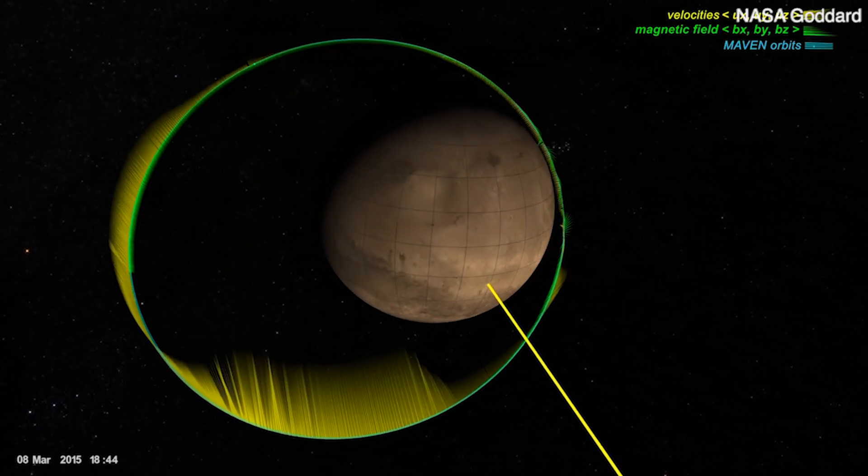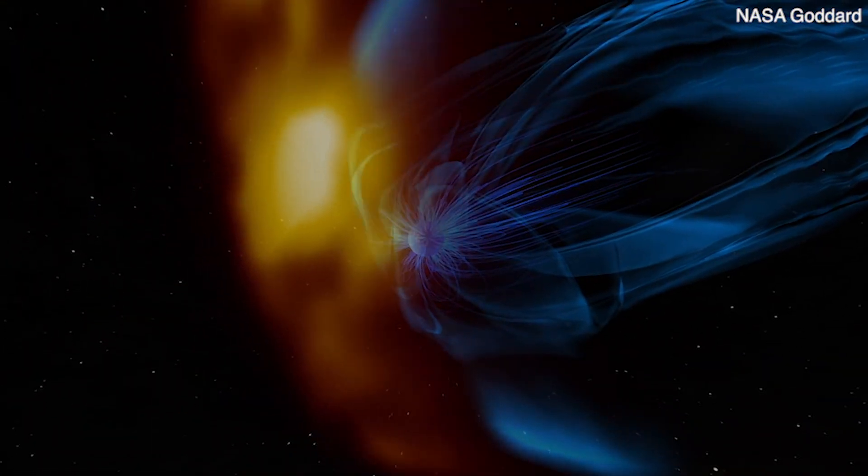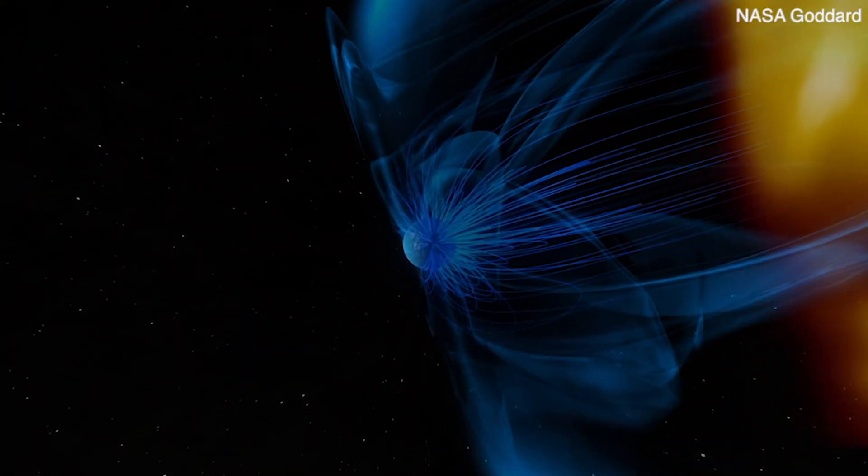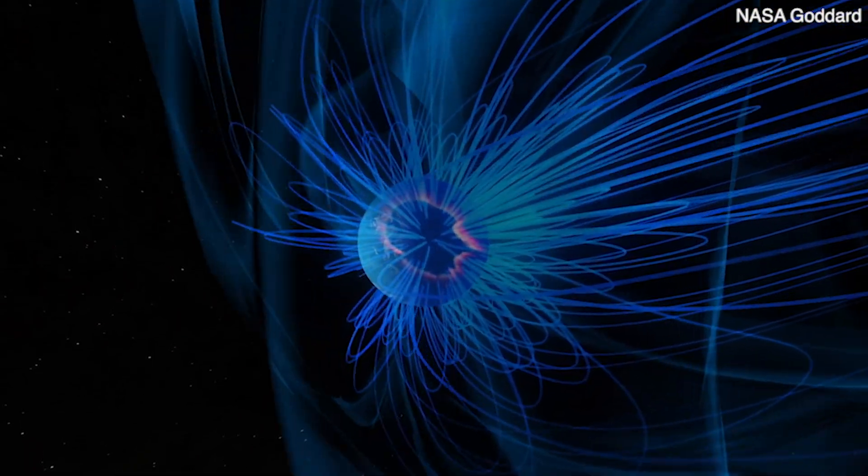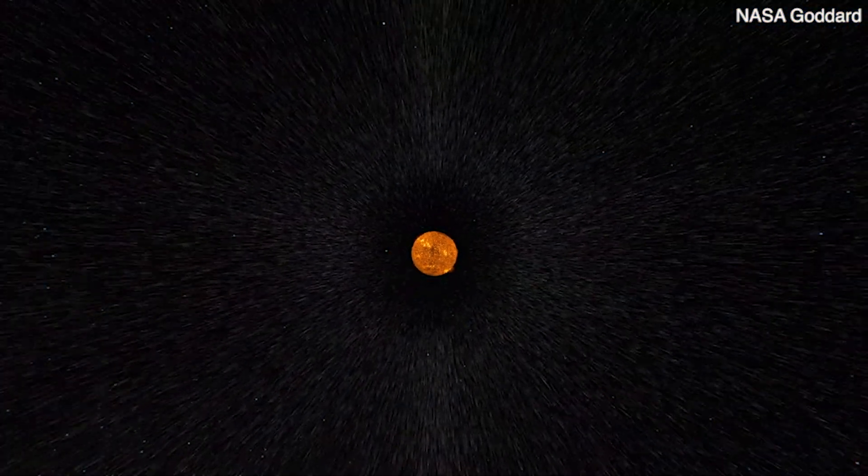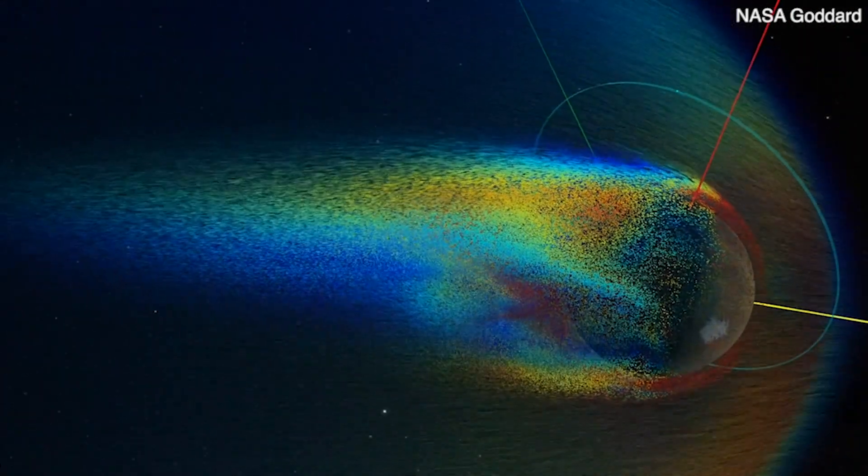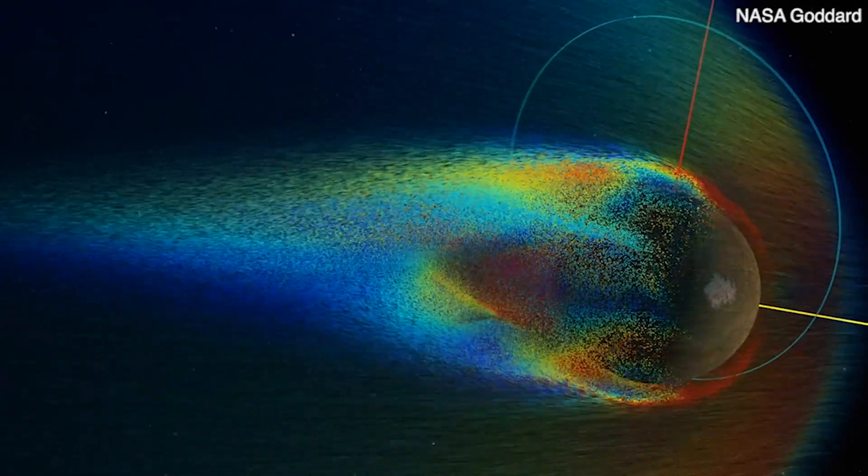We take magnetic field data and we map it around the planet, and from that the currents emerge. We've known how the currents flow in the Earth's magnetosphere for decades, but we don't know how that works around Mars. We don't know how it influences the interaction with the solar wind because it determines how energy is flowing into the atmosphere, how it's transferred from the solar wind into the system, and that's what we're trying to do with MAVEN.